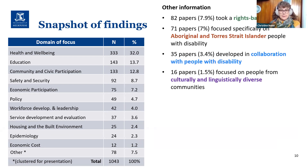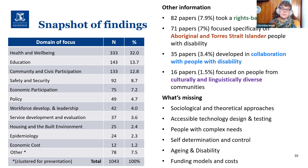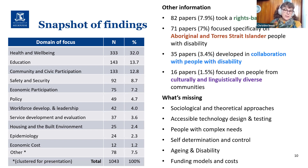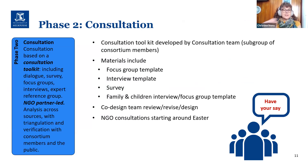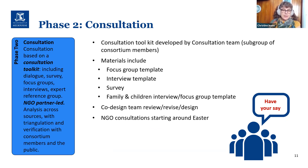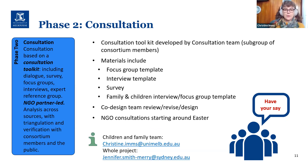A brief gap analysis shows clear gaps in sociological approaches, accessible technology, people with complex needs, research that addresses self-determination and control, aging and disability, and funding models and costs. The next phase is the consultation phase — an opportunity for everyone to have a say. Toolkits have been developed and NGO consultations are starting now. Surveys and links will be available very soon for your opportunity to contribute via a survey, focus group, or interview. You can contact Christine, who leads the children and family team in the consortium, or Professor Jennifer Smith-Merry for the whole project.